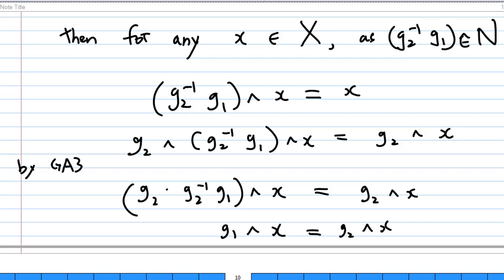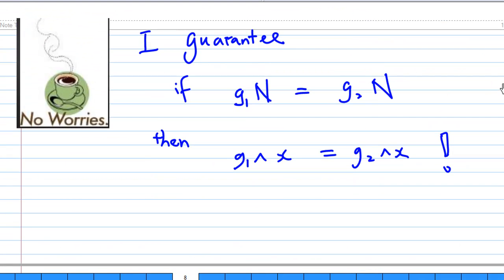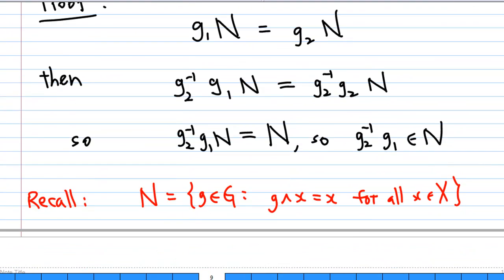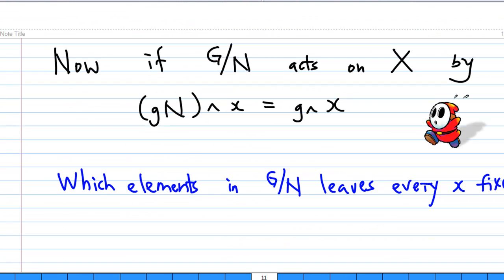So, therefore, we can conclude that as long as g1N equals g2N, then g1^x must equal g2^x. So, this group action makes sense. Now, if G over N acts on X given by gN^x equals g^x, this group action makes sense.